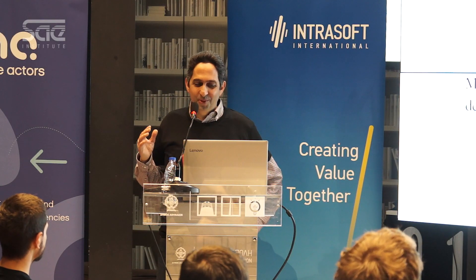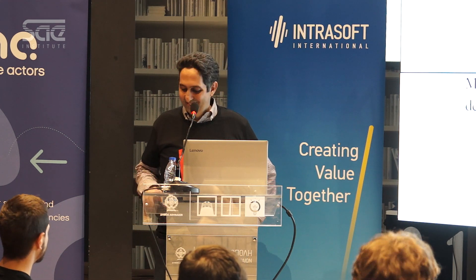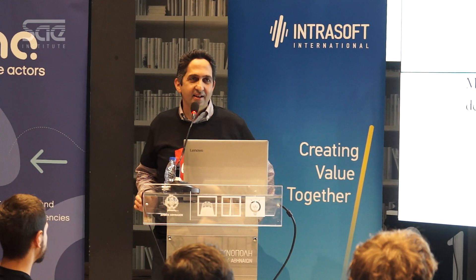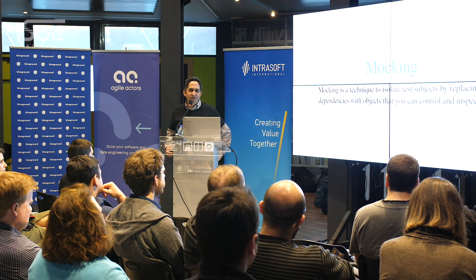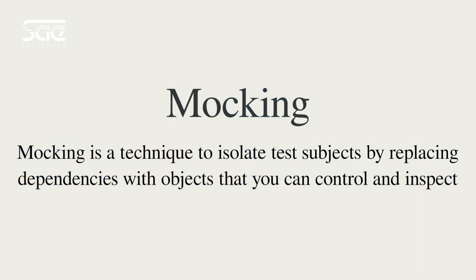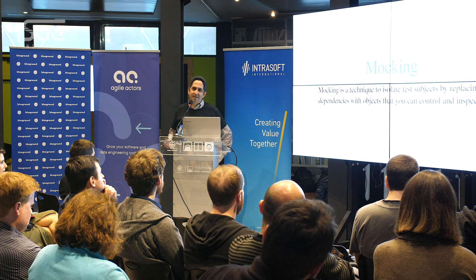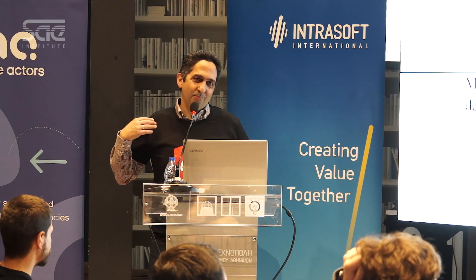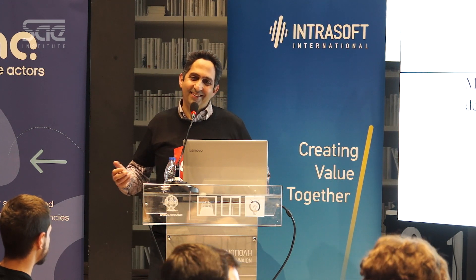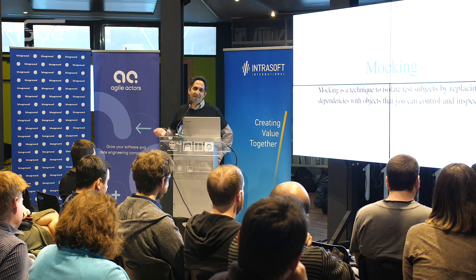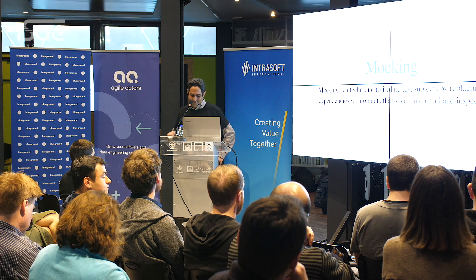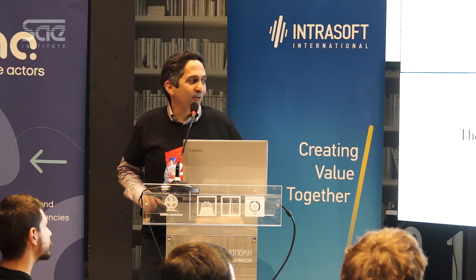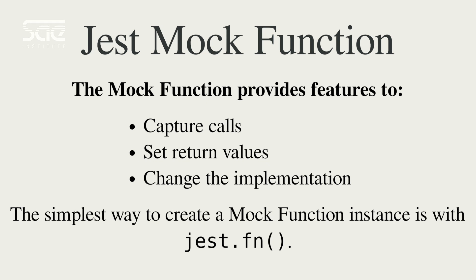I want to mention two main capabilities of the framework. The first is mocking. Mocking is the technique to isolate test subjects by replacing dependencies with objects that you can control and inspect. The unit has some external dependencies, and to test it quickly you provide some fake objects and methods as dependencies. The tests then run in isolated mode and more quickly. Jest provides the jest.fn() function, with which we can capture calls, return our own values, and change the implementation of a real dependency.